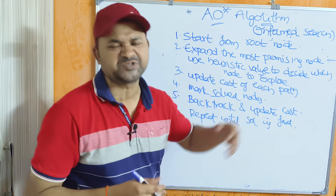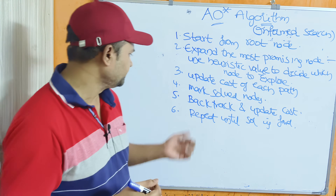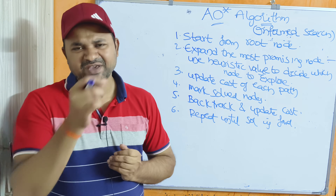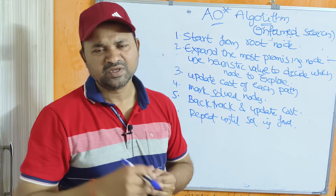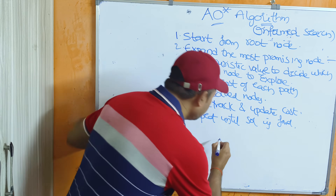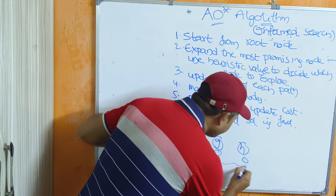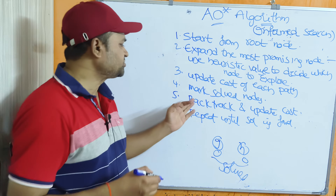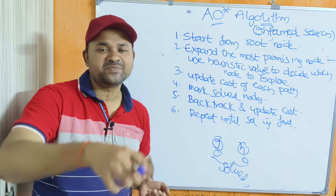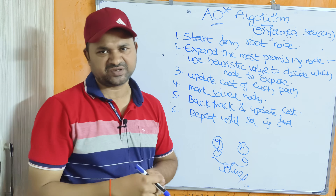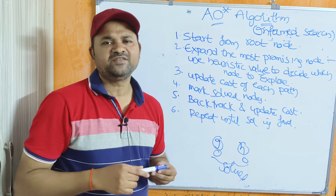Step 3: Update the cost of each path — after finding the cost, update it with the new value. Step 4: Mark solved nodes — if we reach a terminal node whose cost is 0, mark those nodes as solved nodes. Step 5: Backtrack and update the cost — back-propagate the information to the parent node by adding 1 to it. Step 6: Repeat until the solution is found.